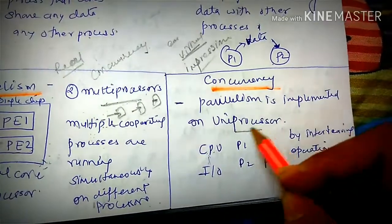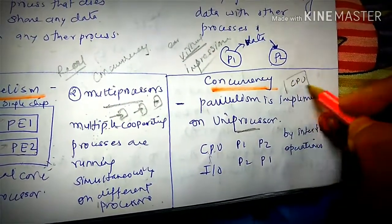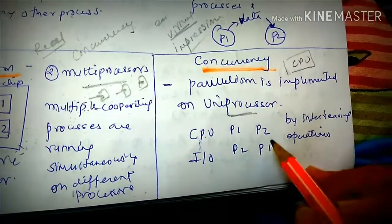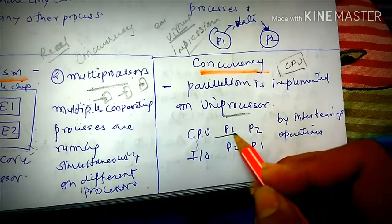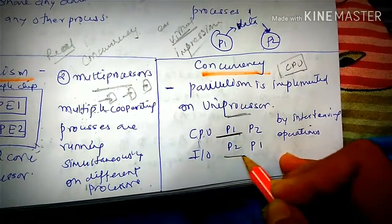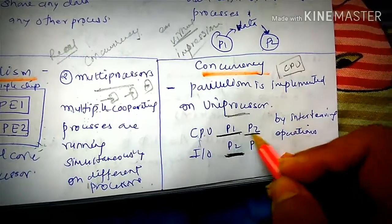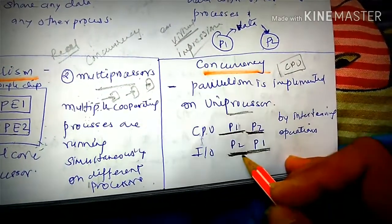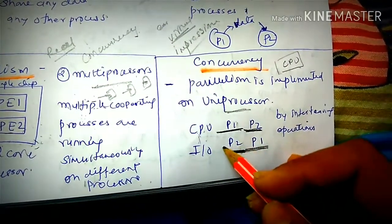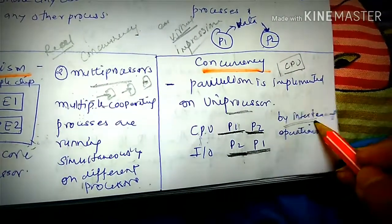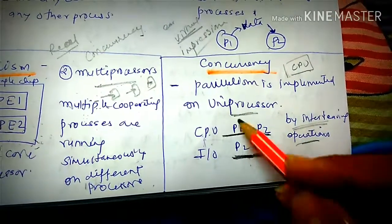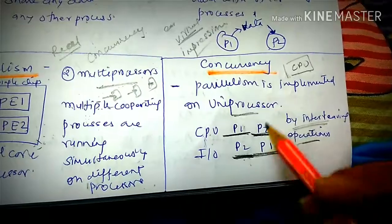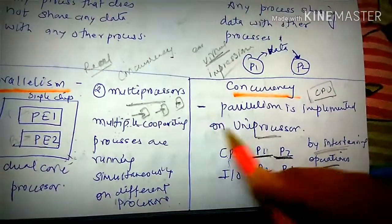Concurrency on a uniprocessor works differently. With a single CPU, we use interleaving: for example, with two processes P1 and P2, one time P1 uses the CPU, the next time P2 uses the CPU. By interleaving CPU usage between processes, we achieve the impression of concurrency. This interleaving is the main difference between parallelism and concurrency.